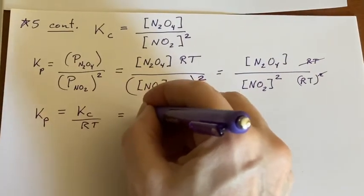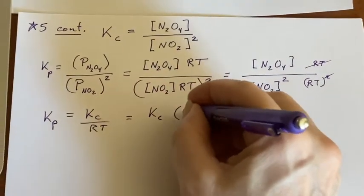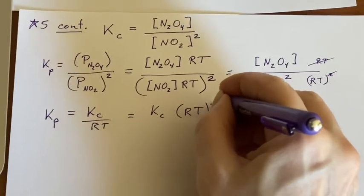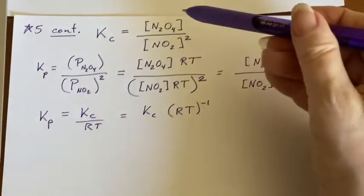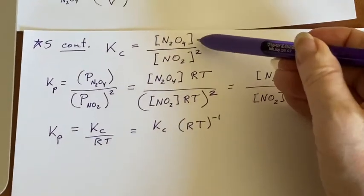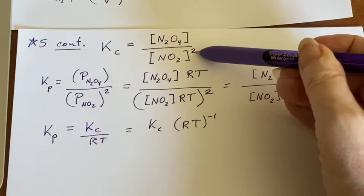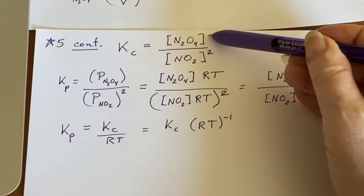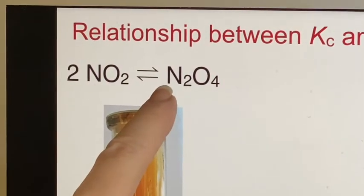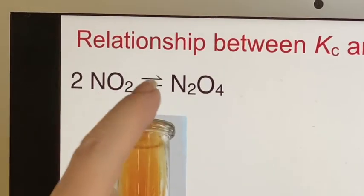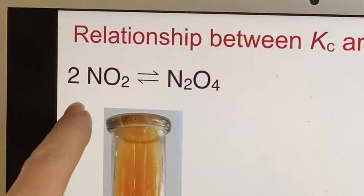Now, where did this come from? It came from the fact that this only appeared once and this appeared twice. Why did this appear once? It appeared once because there's a virtual one as the coefficient here. Why did the other one appear twice? Because there's a two right here.